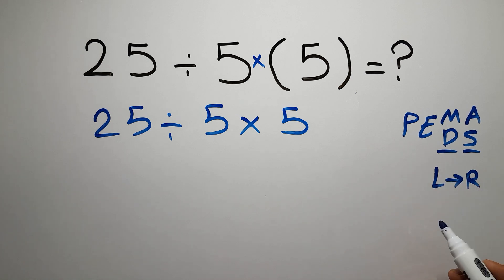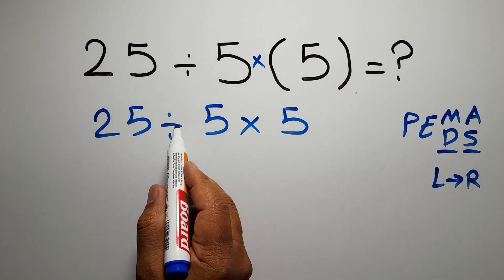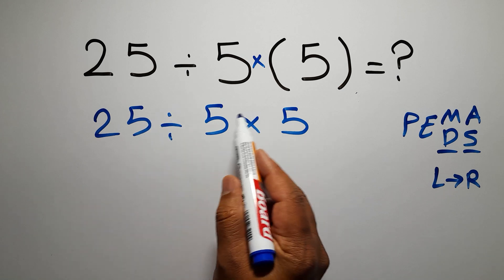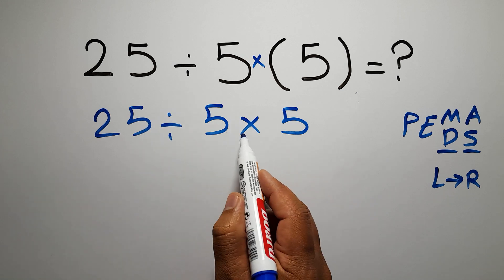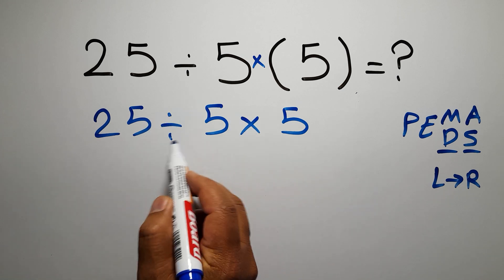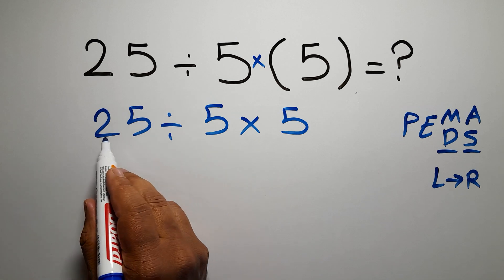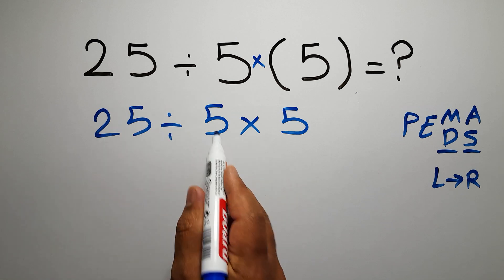and we have to work from left to right. So now we have to do this division, not this multiplication. If you do this multiplication before this division, it is wrong. So first we do 25 divided by